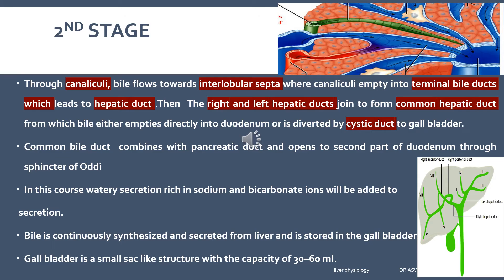The duct system works as follows: through the canaliculi situated nearby the hepatocytes, the initial secretion flows towards the interlobular septa. There, the canaliculi empty into terminal bile ducts, which join together to form the hepatic duct. The right and left hepatic ducts join to form the common hepatic duct. From the common hepatic duct, bile can be delivered into the duodenum or temporarily diverted into the gallbladder via the cystic duct. The common bile duct combines with the pancreatic duct and opens into the second part of the duodenum through the sphincter of Oddi.